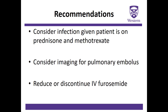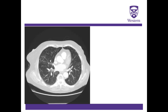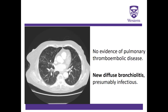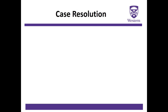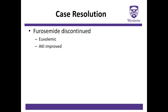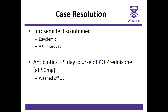The team took our advice and obtained a CT scan with PE protocol. There was no evidence of pulmonary embolism, but there was evidence of new diffuse bronchiolitis, and the reporting radiologist felt this was consistent with an infectious cause. The team discontinued her furosemide, she became euvolemic, and her AKI improved. Rather than continuing diuresis, they chose antibiotics and a five-day course of increased-dose prednisone at 50 mg. With this, she was weaned off oxygen and ultimately discharged home.